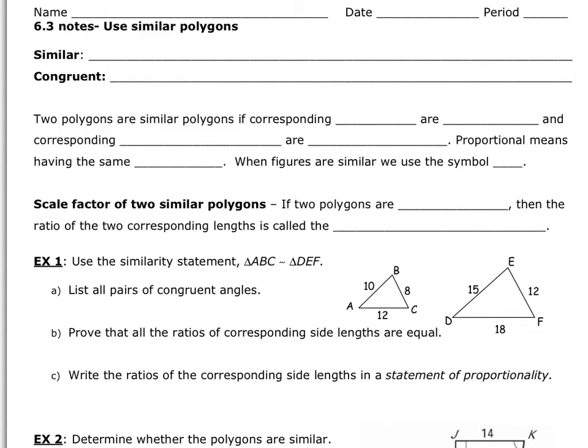Alright, so now we're going to take what we learned about ratio and proportion and apply them to polygons. Let's recap what similar means — it is the same shape, but a different size.